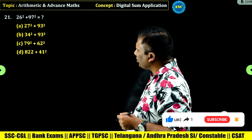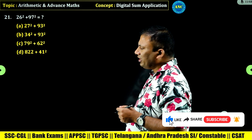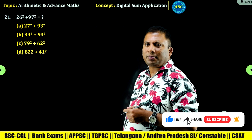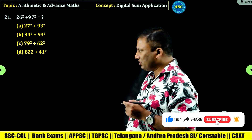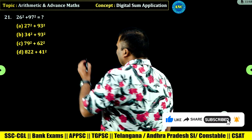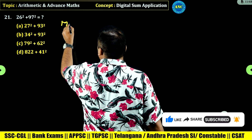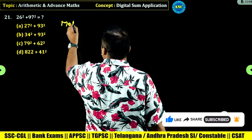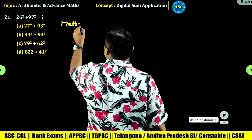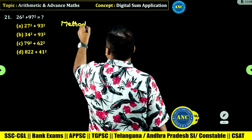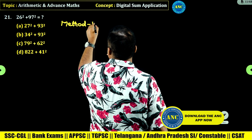These are beautiful questions. 26 square plus 97 square. I will tell you two methods. These kinds of questions are very, very popular in multi-aptitude exams.